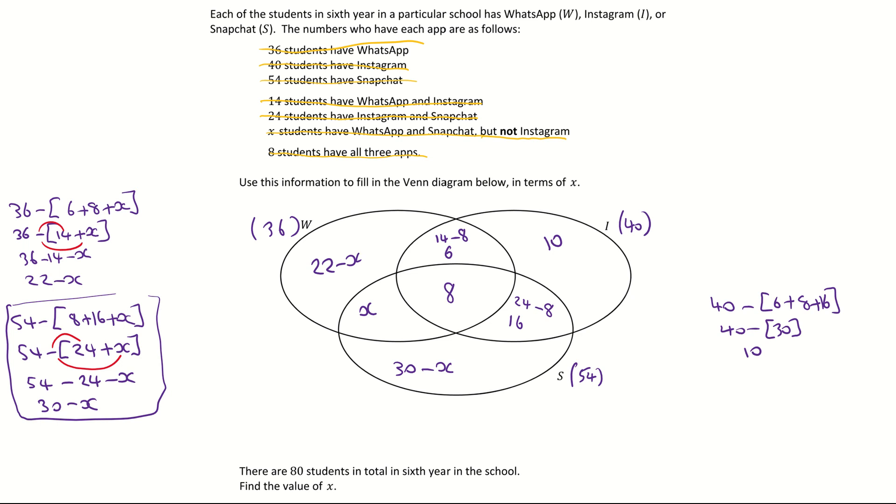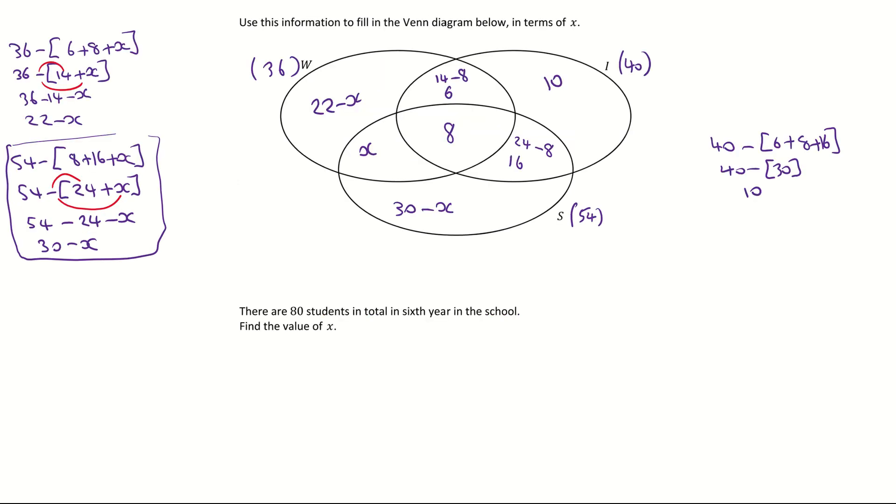Scrolling down now to the next part of the question. It says there are 80 students in total in sixth year in the school. Find the value of X. So it's important here because they have to tell you how many there are in total. And if you think of what your Venn diagram is doing, if you add up every single region within your Venn diagram, it should equal the total number of students, which is 80. So that's what I'm going to do. I'm going to list them all out, add them together, and let it equal to 80.